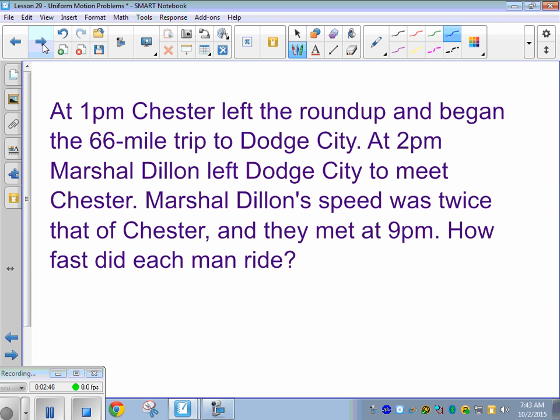But time walking was 2 hours. All right. Let's try another one. At 1 p.m., Chester left the Roundup and began the 66-mile trip to Dodge City. At 2 p.m., Marshall Dillon left Dodge City to meet Chester. Marshall Dillon's speed was twice that of Chester, and they met at 9 p.m. How fast did each man ride? Oh, that makes a lot more sense. Okay. We should draw a picture.